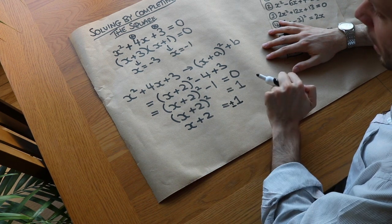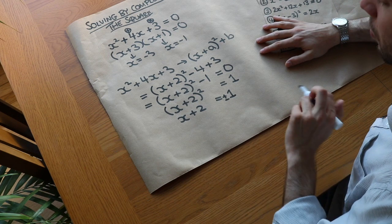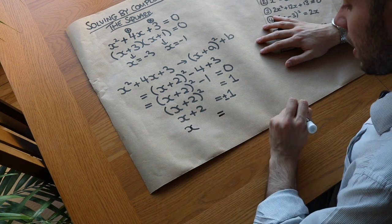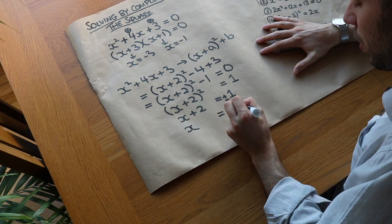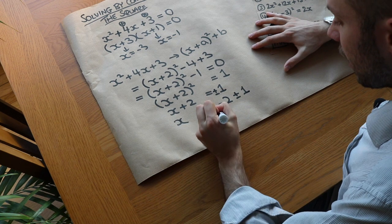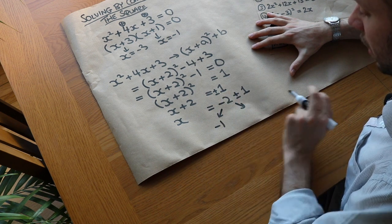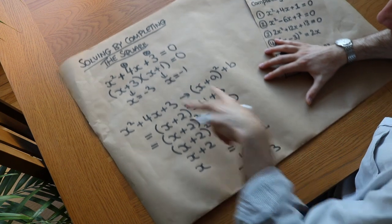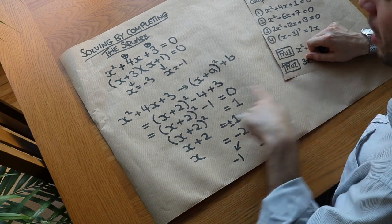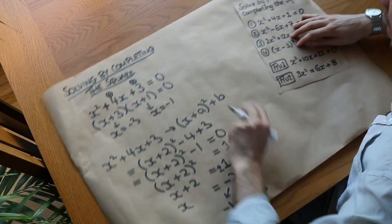The square root of 1 could also be negative 1, because minus 1 times minus 1 is 1. So it's actually plus or minus 1 — you have to include the plus or minus, otherwise we lose a solution. Then we subtract 2 from both sides, giving x equals minus 2 plus or minus 1. So minus 2 plus 1 is minus 1, and minus 2 minus 1 is minus 3, which matches our factorization solutions. In this example factorization is easier, but completing the square works even when the expression doesn't factorise.